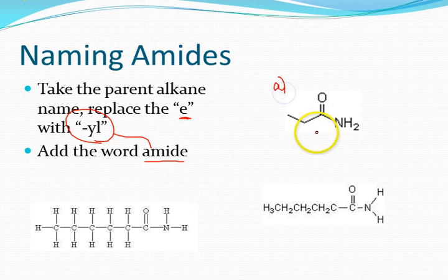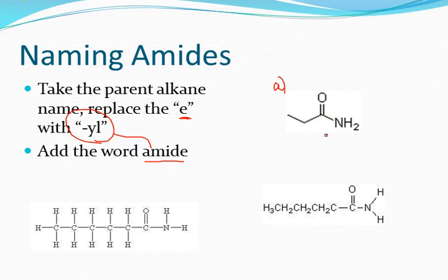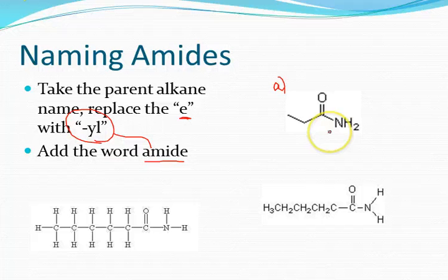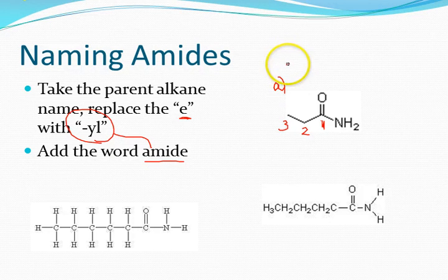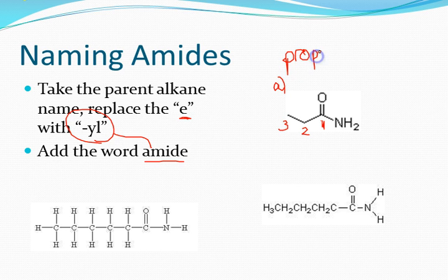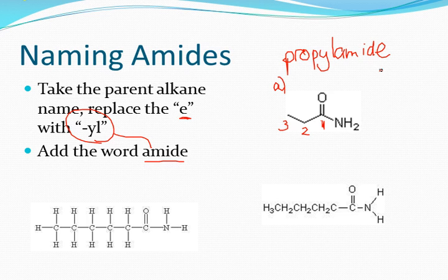So if we look at molecule A here, how many carbons are in this chain? There are three. That's right, Robert. This would be carbon number one, the one closest to the nitrogen. There are three carbons. What do we call a three-carbon group? Propyl. So we could call this propylamide. Yeah, it's that simple.